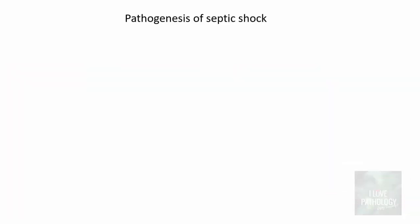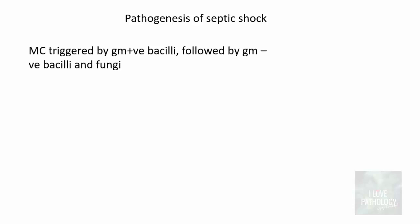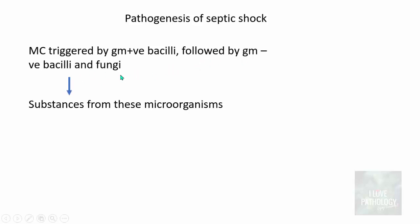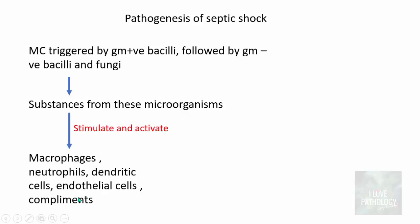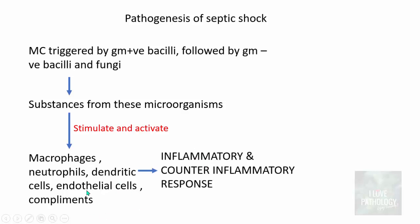Now we will understand in detail the pathogenesis of septic shock. Septic shock is most commonly triggered by gram-positive bacilli, followed by gram-negative bacilli and fungi. Substances from these microorganisms stimulate and activate macrophages, neutrophils, dendritic cells, endothelial cells, and even the complement pathways. Once these are activated, that leads to various inflammatory and counter-inflammatory responses, the end result of which is septic shock leading to organ failure and death.